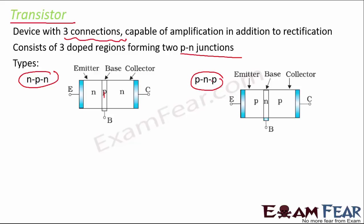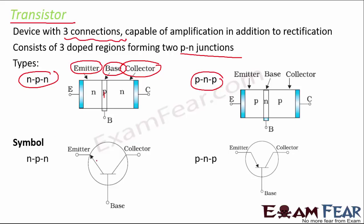Transistors have three regions: emitter, base, and collector. The emitter emits electrons, the collector collects electrons, and the base separates the emitter from the collector. In an N-P-N transistor symbol, the arrow points outward; in P-N-P, it points inward. The emitter is heavily doped and moderately thick; the base is very lightly doped and very thin; and the collector is large in size and moderately doped.